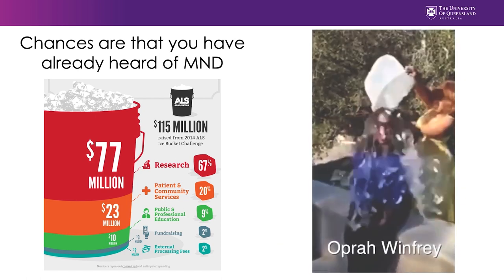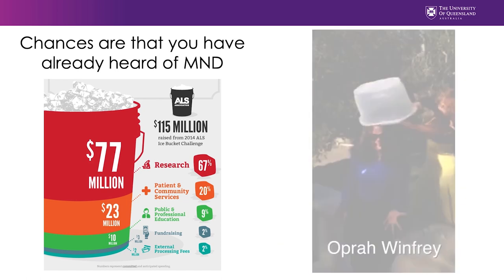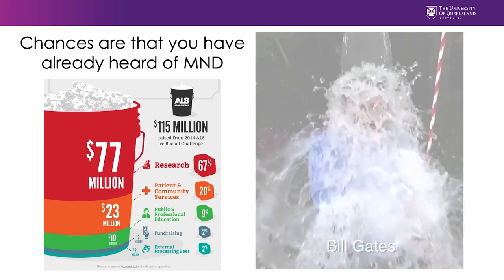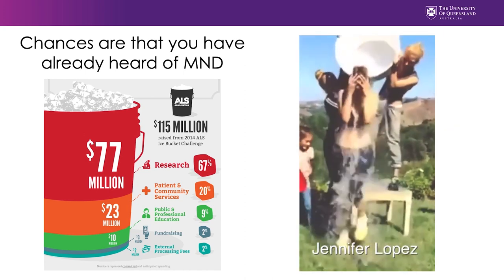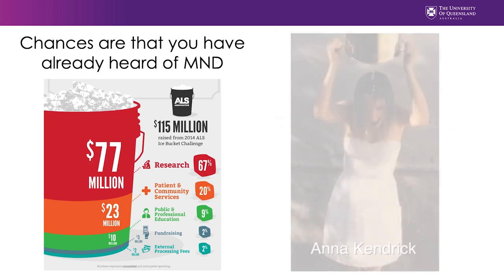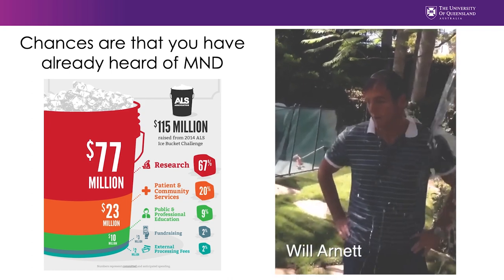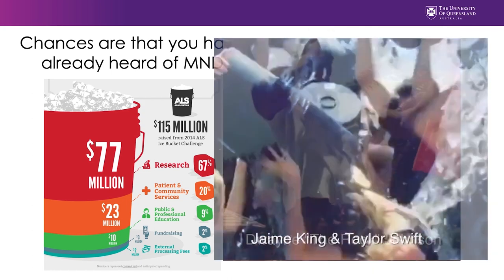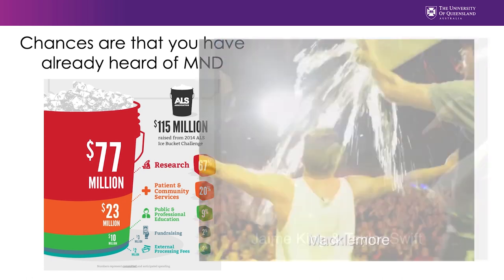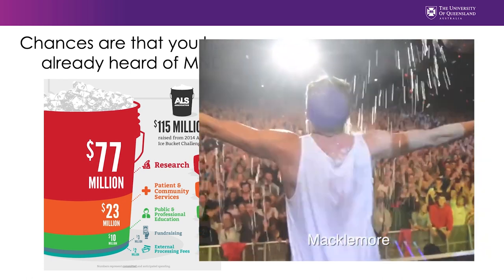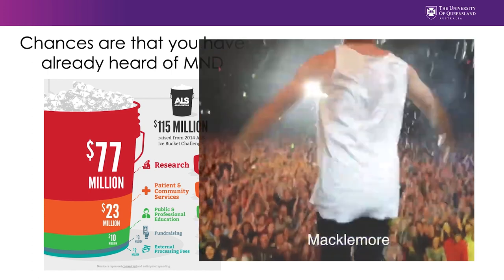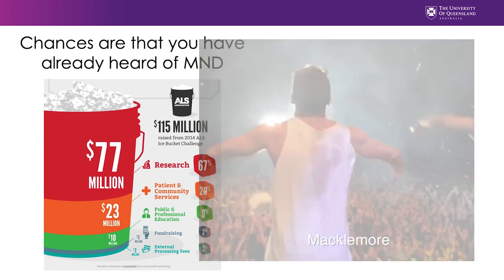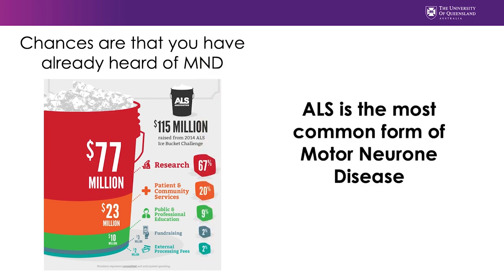MND is also known as ALS, and it's very possible you've already heard of ALS. In 2014, hundreds of thousands of people all around the world started pouring ice on themselves, and they did this in an effort to raise awareness, but also money, for the research of a disease known as amyotrophic lateral sclerosis. It's important to recognize that amyotrophic lateral sclerosis, or ALS, is the most common form of motor neuron disease.